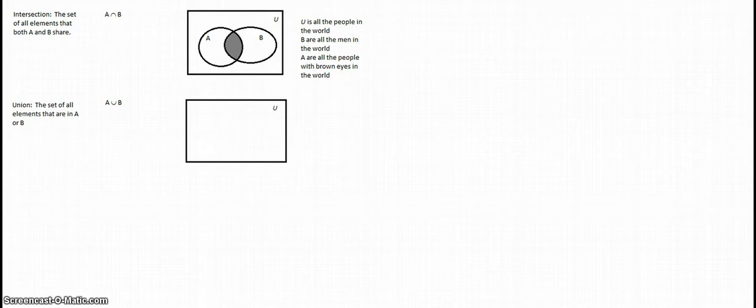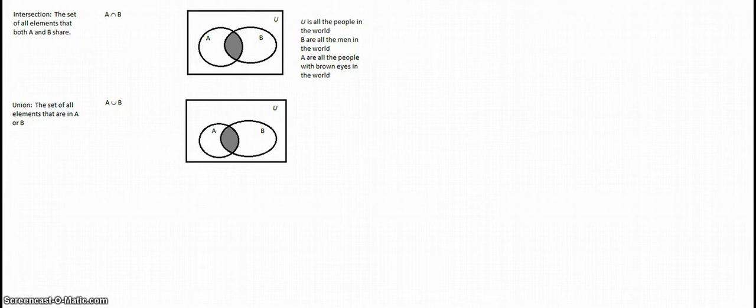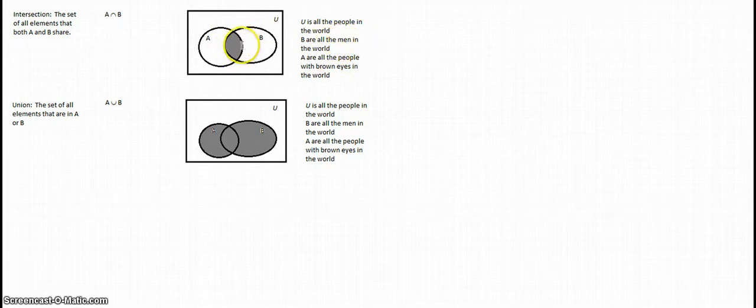I'm going to demonstrate this with a diagram. We have the universal set, an A set, and a B set. It's going to look very similar to the intersection diagram, but we also include what's in B and what's in A. Using the same example: U is all the people in the world, B are all the men in the world, and A are all the people with brown eyes. The answer for the intersection would be all men that have brown eyes — that's the piece right here — all men with brown eyes.